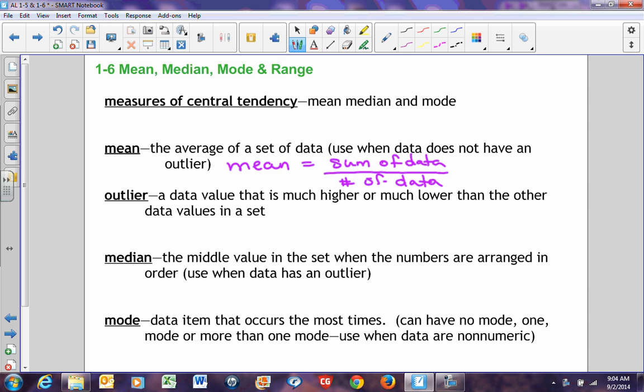You always use the mean when your data does not have an outlier. An outlier is a data value that is much higher or much lower than all the other data values in the set.